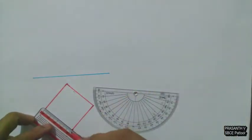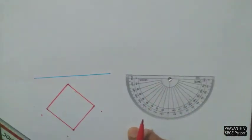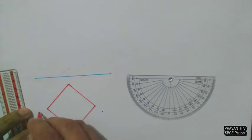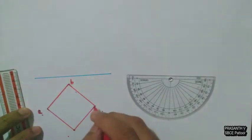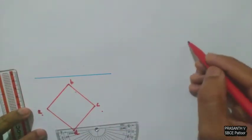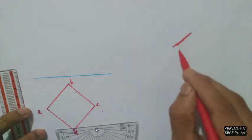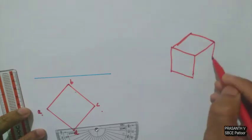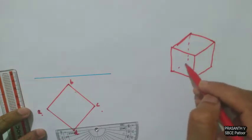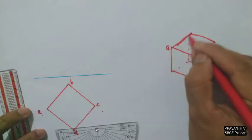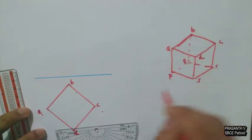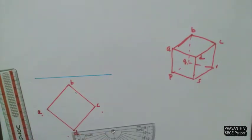Place your protractor and take 90 degrees. Complete the top view of the cube. Since this is the top view of the cube, we can name the corners. The top face of the cube is A, B, C, D. The bottom face we can give P, Q, R, S. You have to name accordingly.